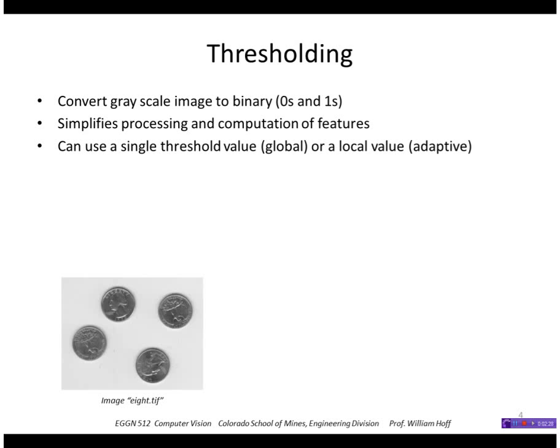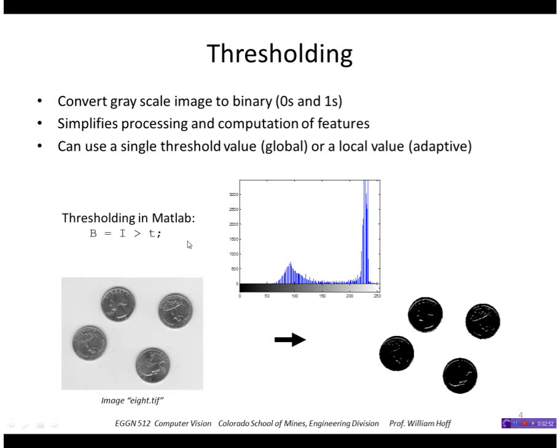So an example would be this MATLAB image called eight.tiff. Its histogram looks like this. It has a group of pixels that are sort of dark, those would be the coins, and a large group of pixels that are bright, that would be the background. So we can threshold the image. In MATLAB you can do this using this expression i greater than t where t is the threshold that you use. So this expression is true wherever the pixel in i is greater than t. So you would get a logical operation where the white represents true and the black represents false.